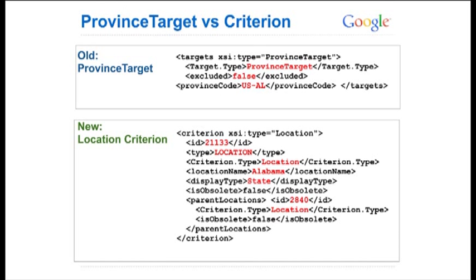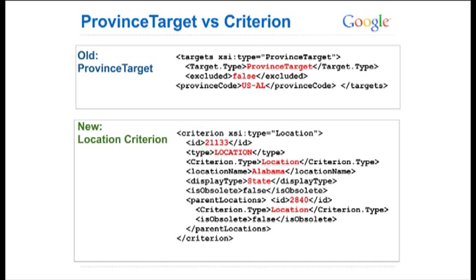Let's look at one more example, this time with geo targeting. In the previous version of the API, you would receive the following for a province target: target type is province target, province code US, Alabama. In the new campaign criterion service response, XSI type is location, the ID is 21133, and the rest is helpful data you might want in your response but doesn't need to be passed in when creating these criteria. The response also contains a parent locations object showing that the parent of Alabama is 2840, which corresponds to the United States.